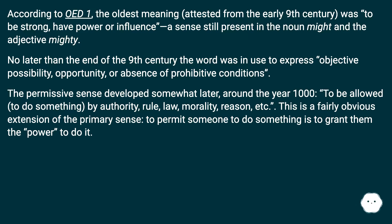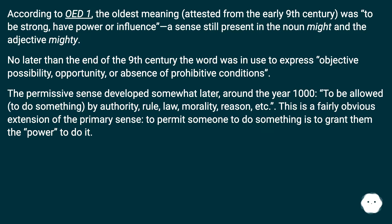The permissive sense developed somewhat later, around the year 1000 — 'to be allowed to do something by authority, rule, law, morality, reason,' etc. This is a fairly obvious extension of the primary sense: to permit someone to do something is to grant them the power to do it.